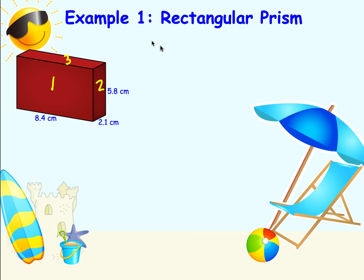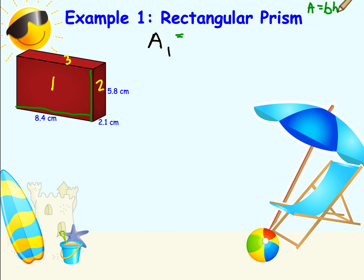We're going to do the area of rectangle one first. Rectangle one is 8.4 by 5.8. Since they're all rectangles, the formula is base times height. So we do 8.4 by 5.8, and we multiply by two because there are two of them.